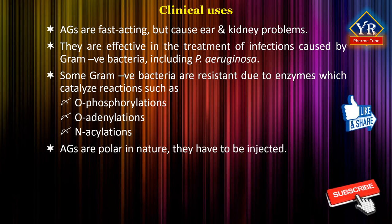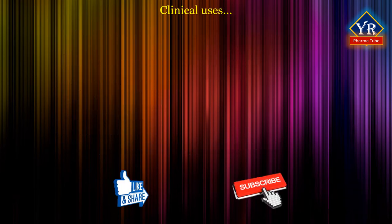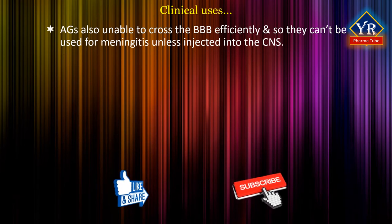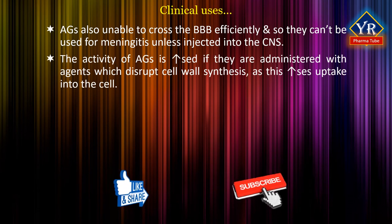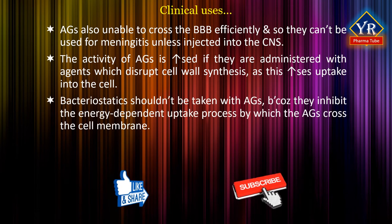Because the aminoglycosides are polar in nature, they have to be injected. Aminoglycosides are also unable to cross the blood-brain barrier efficiently and so they cannot be used in the treatment of meningitis unless they are injected directly into the central nervous system. The activity of aminoglycosides is increased if they are administered with agents which disrupt cell wall synthesis, as this increases uptake into the cell. However, bacteriostatic agents should not be taken with aminoglycosides because these inhibit the energy-dependent uptake process by which the aminoglycosides cross the cell membrane.